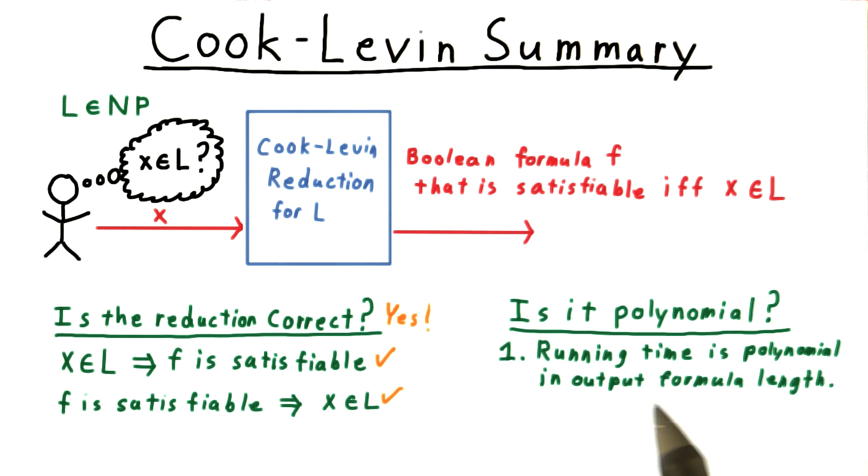First, I claim that the running time is polynomial in the output formula length. There just isn't much calculation to be done besides iterating over the combination of steps, head positions, states, and tape symbols, and printing out the associated terms of the formula.